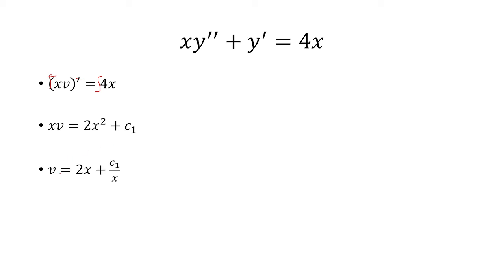Solving for v, we get v is 2x plus the constant over x. But remember, v was y prime, so if I integrate both sides, I get y equals x squared plus c1 ln of x plus c2. And this is my final answer.